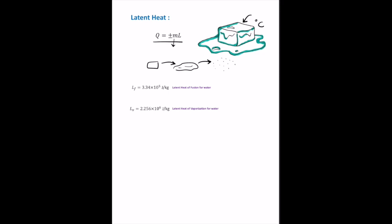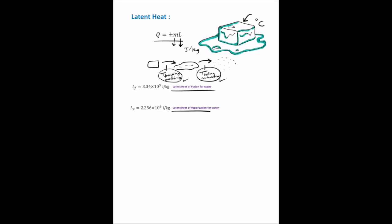The energy required to change the phase of a pure substance is given by Q = mL, where m is the mass and L is the latent heat — the heat required per unit mass, in joules per kilogram. For any material at a given pressure, the freezing temperature equals the melting temperature, and the boiling temperature equals the condensation temperature. At these unique temperatures, the phases can coexist in phase equilibrium.